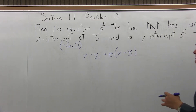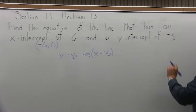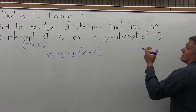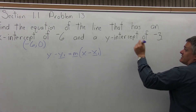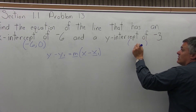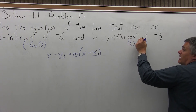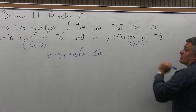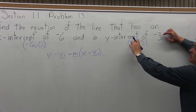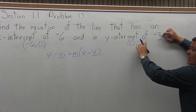Similar reasoning: the y-intercept of negative 3 means that this line crosses the y-axis down 3. That's a different way of giving you the coordinates 0, negative 3. A y-intercept of negative 3 means you're going through the point over 0 and down 3.